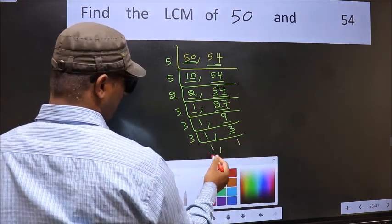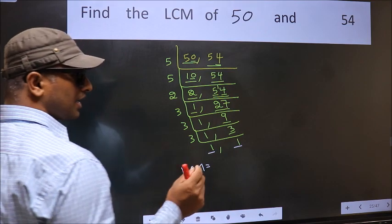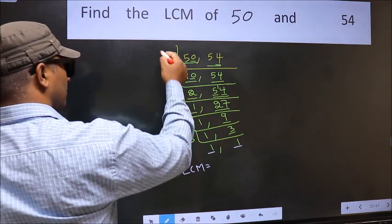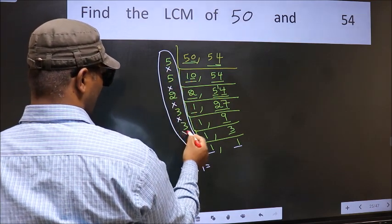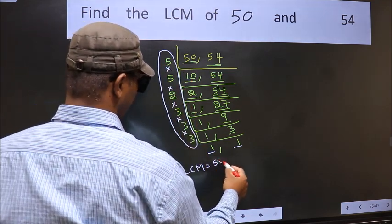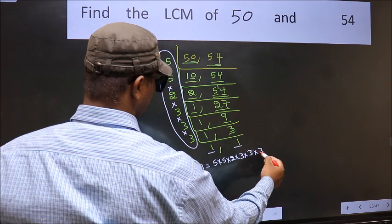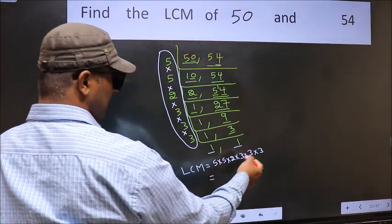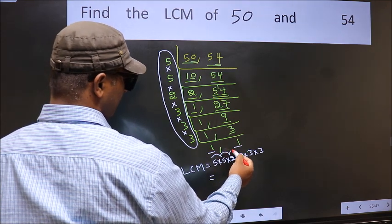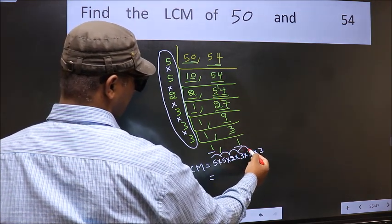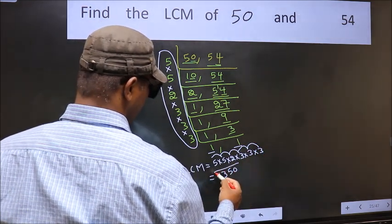So we got 1 in both places. Our LCM is the product of these numbers: 5 times 5 times 2 times 3 times 3 times 3 times 3. Let us multiply these numbers: 5 times 5 is 25, times 2 is 50, times 3 is 150, times 3 is 450, times 3 is 1350. So 1350 is our LCM.